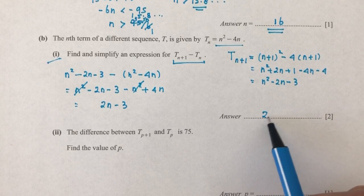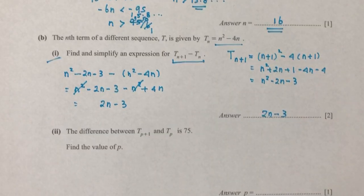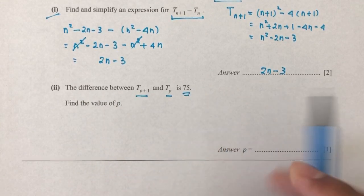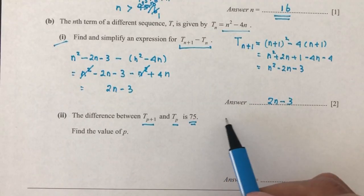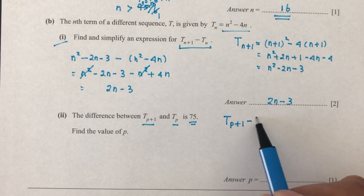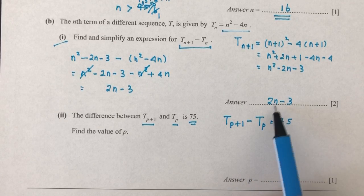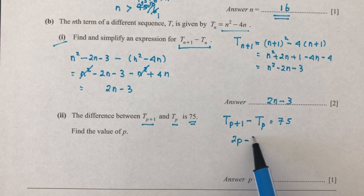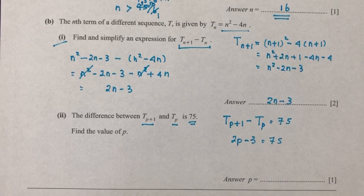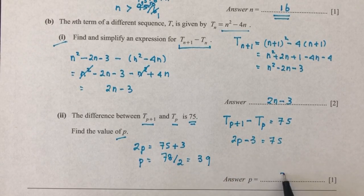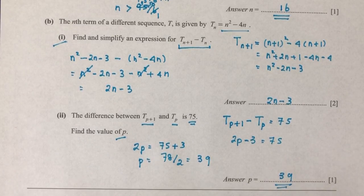Now for part two: the difference between T_{p+1} and T_p is 75. Basically we're saying T_{p+1} - T_p equals 75. We have T_{n+1} - T_n equal to this, so this means 2p - 3 equals 75. Now we have to find the value of p. We'll make p the subject of the formula, so 2p becomes 75 plus 3. P will become 78 divided by 2, which is 39. So p equals 39.